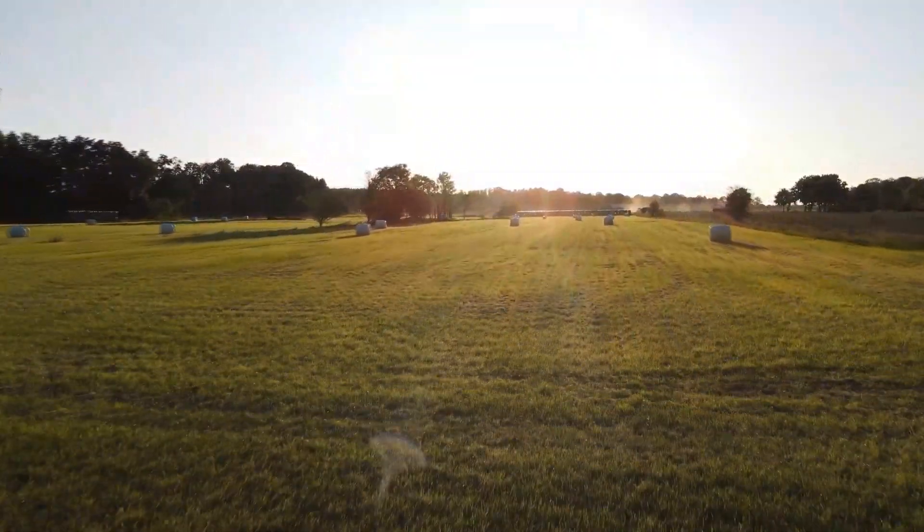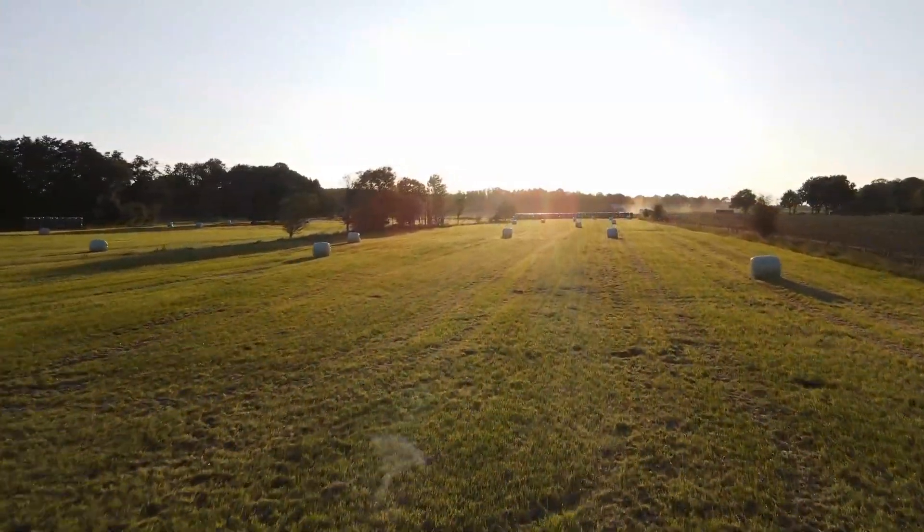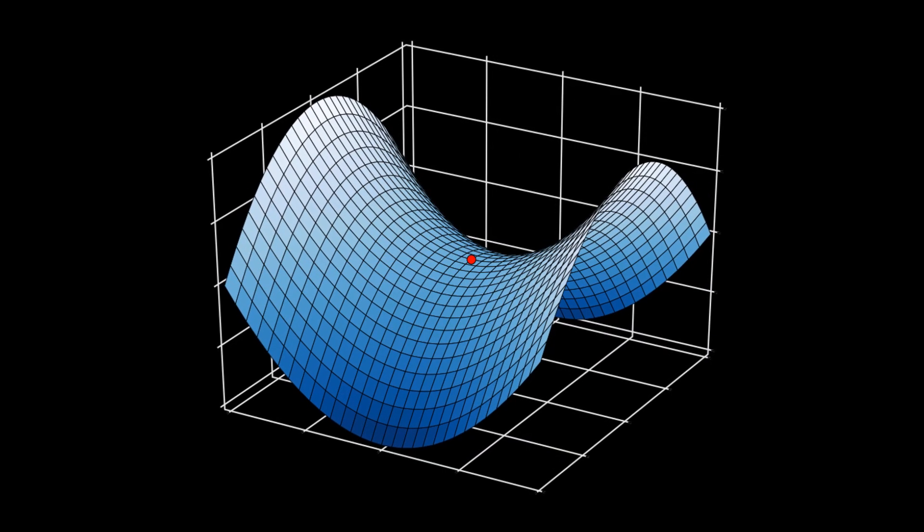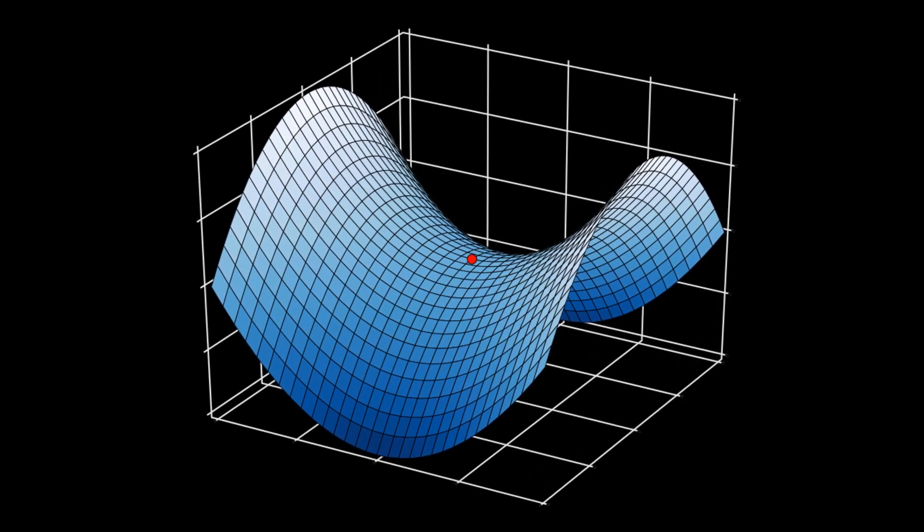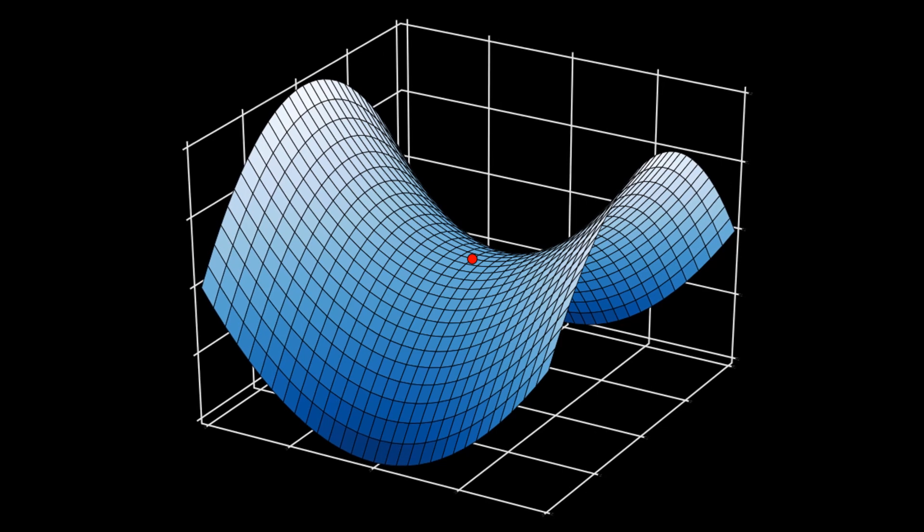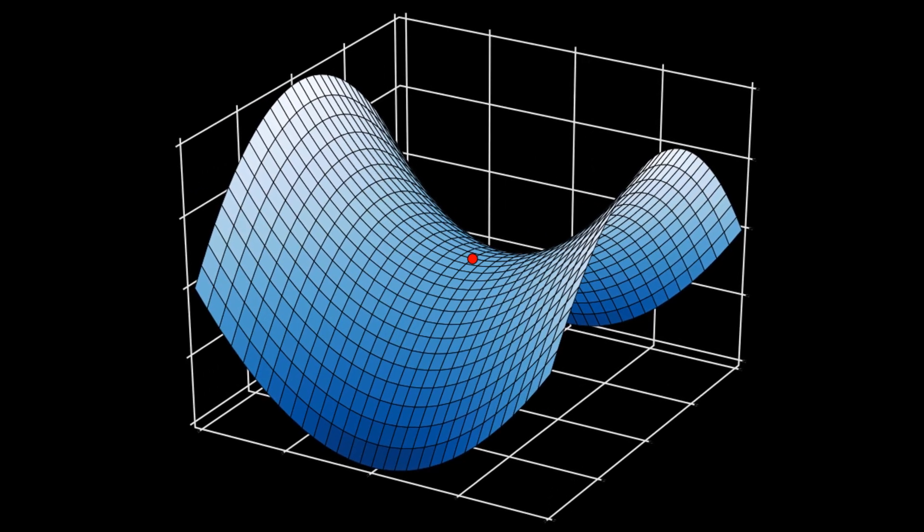Geometrically, a Sphaleron is a saddle point of the electroweak potential. This saddle point rests at the top of a barrier between two different low energy equilibria of a given system. The two equilibria are labeled with two different baryon numbers.